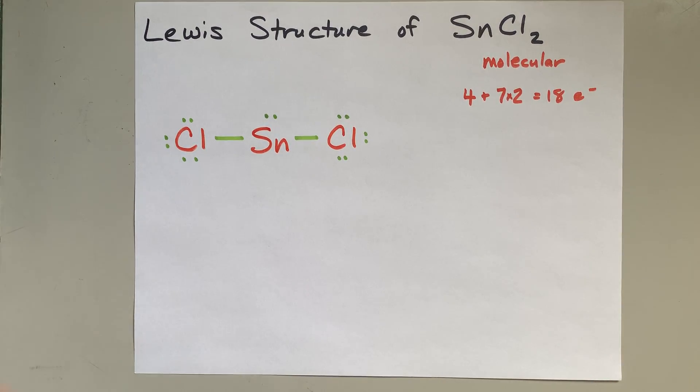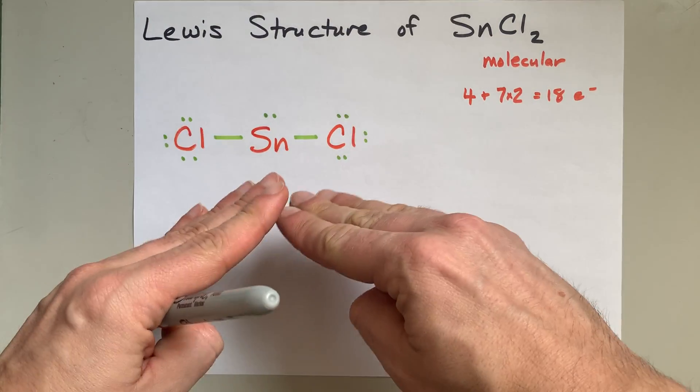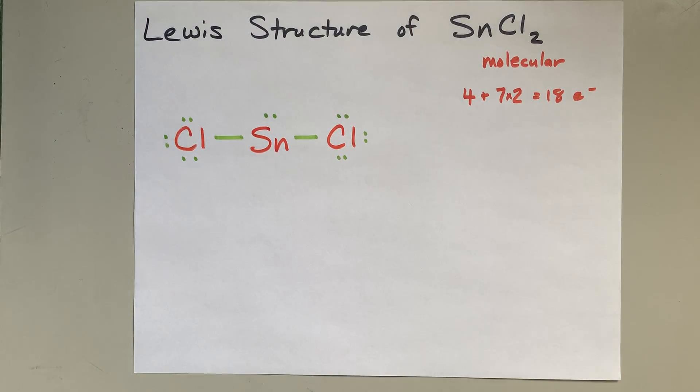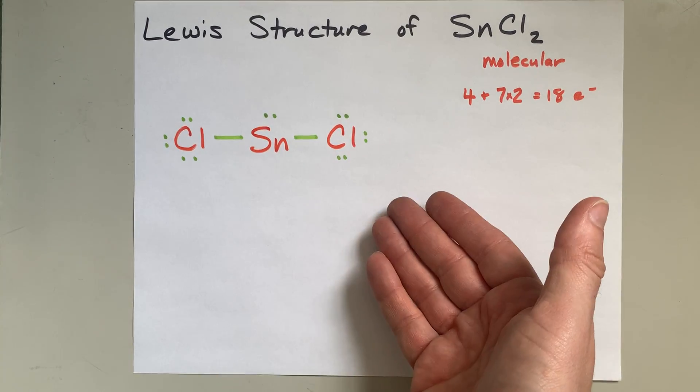If you were going to draw the VSEPR shape for this, this is one, two, three things around it, but the lone pair doesn't take up space, so it's a bent shape. You can verify that that's true as well. And there's one lone pair on the tin. Again, I've drawn it the way it is in real life.